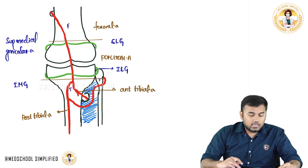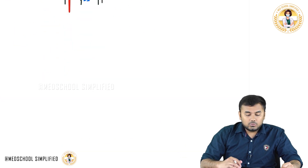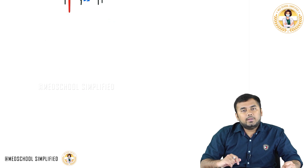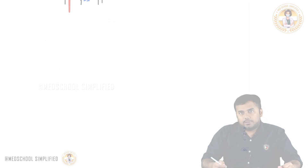So these are the complete anastomoses which you will see around the knee joint.